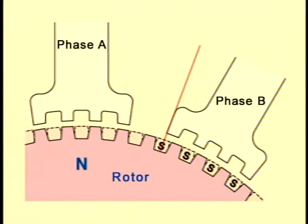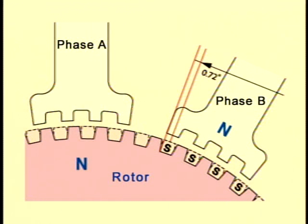The teeth in the north pole are repelled by rotor 1 and the rotors rotate until each magnetic attraction is balanced. The rotating angle 0.72 degrees is the basic step angle of the five-phase stepping motor.